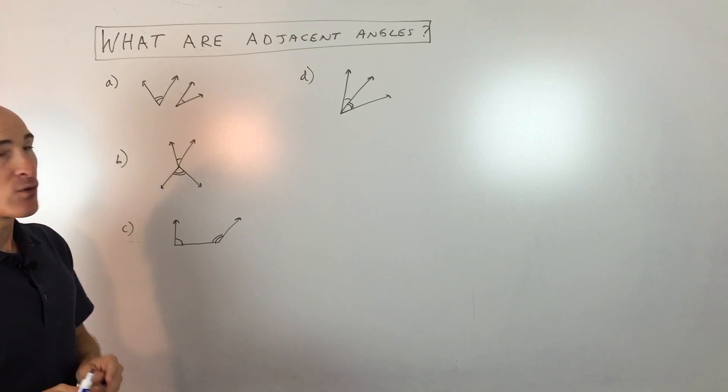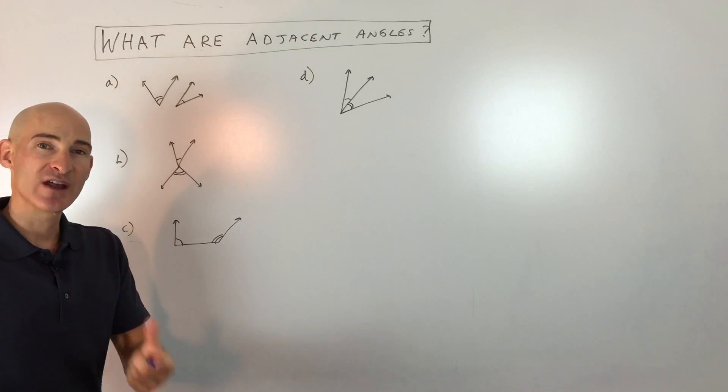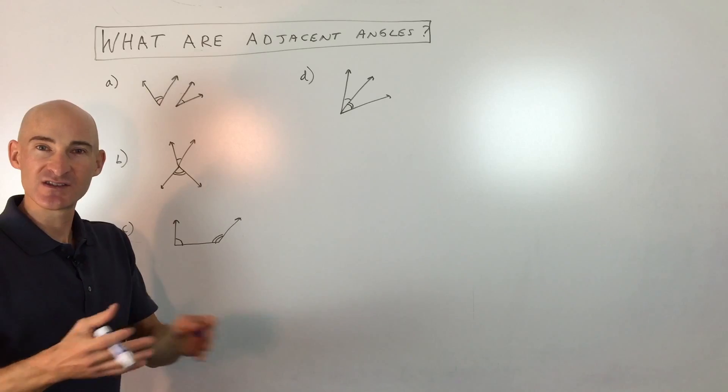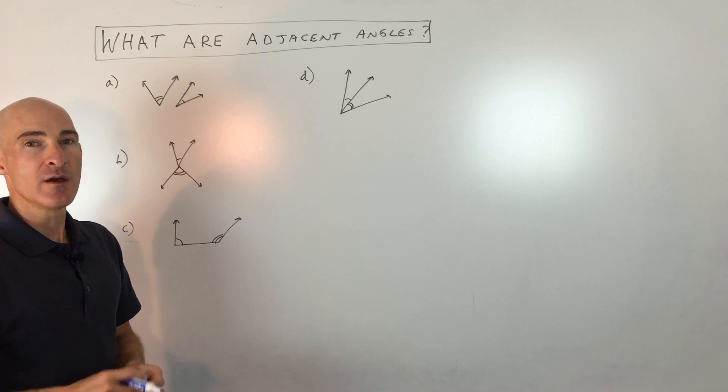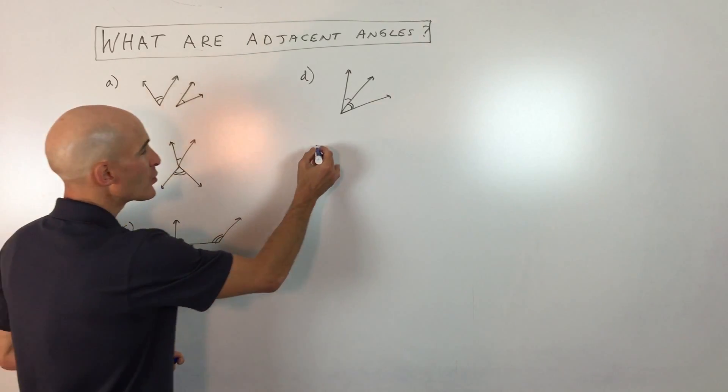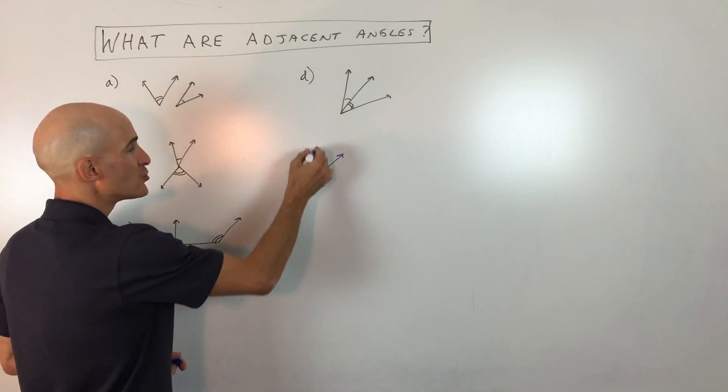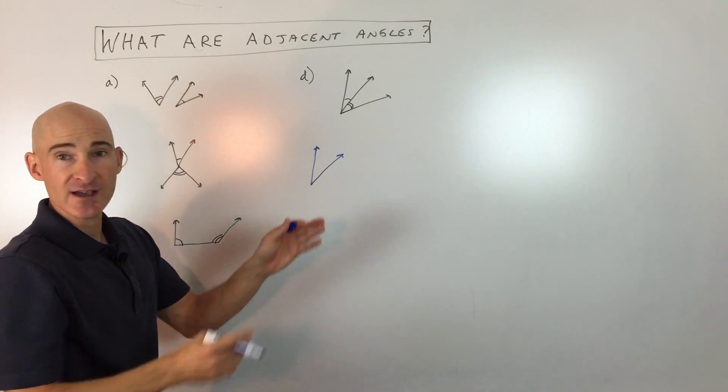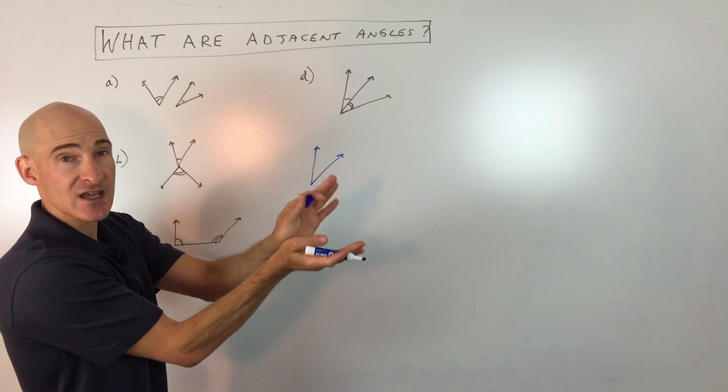First of all, when we talk about adjacent angles, adjacent does mean next to in everyday language, right? Adjacent means right next to one another. But specifically speaking, when you work with an angle, an angle is made up of two rays and a vertex. The vertex you can think of as like the hinge of an angle.